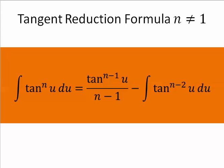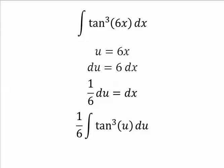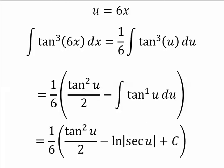All right. So from here, we use our power reducing formula. And then again, the antiderivative of tangent is ln of secant. And then make that substitution.